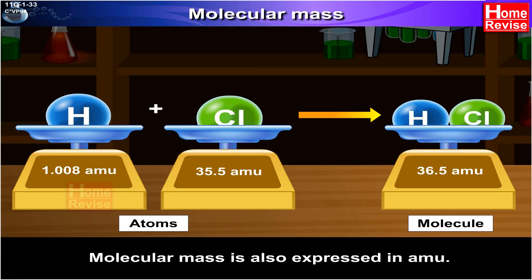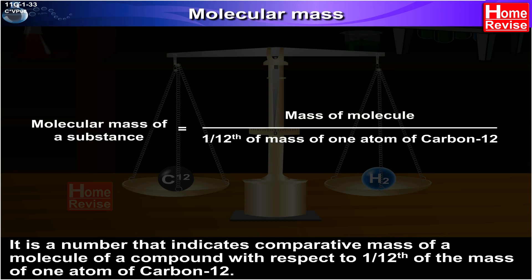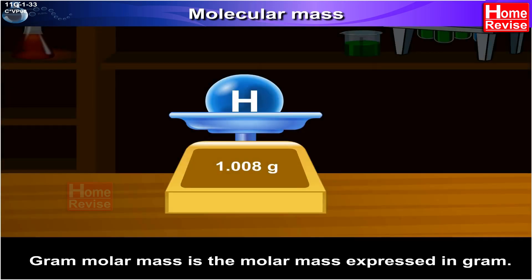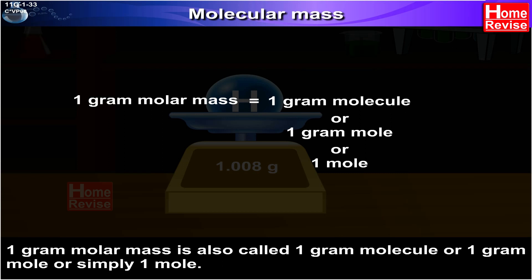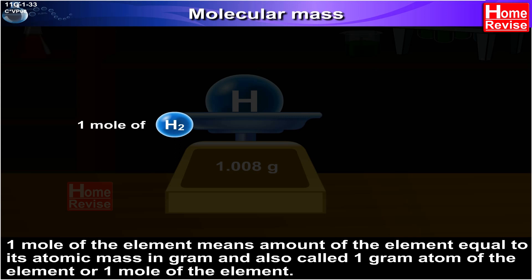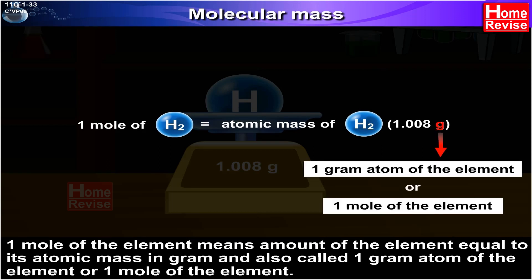Molecular mass is also expressed in AMU. It is a number that indicates the comparative mass of a molecule of a compound with respect to one-twelfth of the mass of one atom of carbon-12. Gram molar mass is the molar mass expressed in grams. One gram molar mass, also called one gram molecule, or one gram mole, or simply one mole. One mole of the element means the amount of the element equal to its atomic mass in grams, and is also called one gram atom of the element, or one mole of the element.